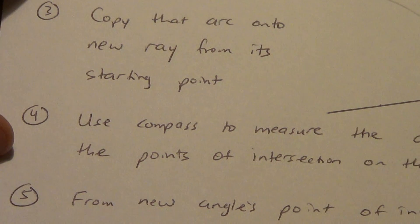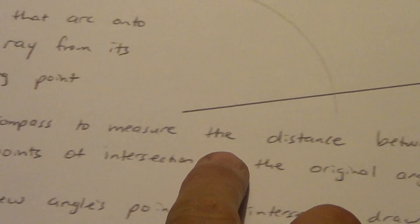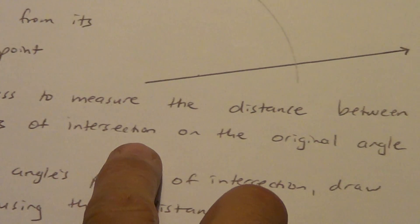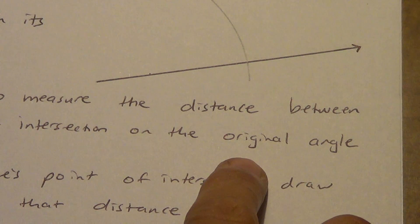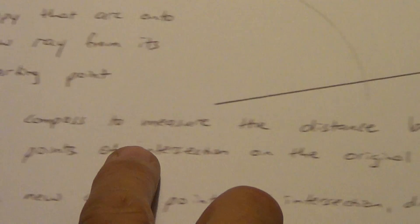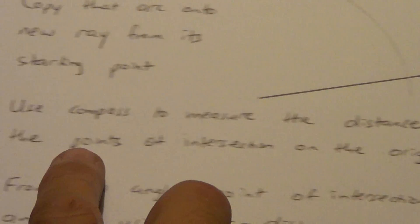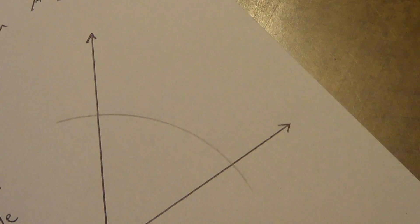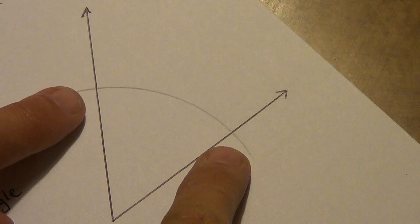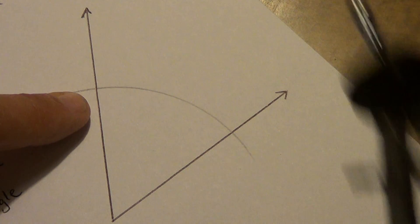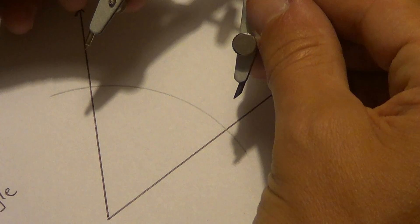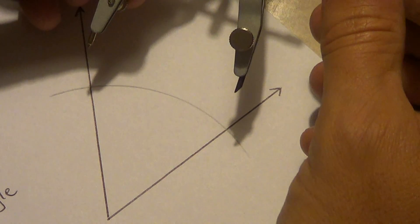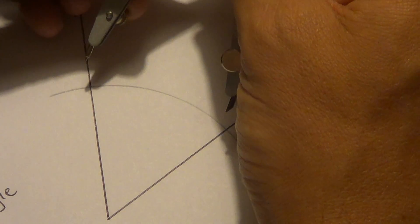Alright, step four. Use your compass to measure the distance between the points of intersection on the original angle. Let's go back to that original angle, and you see these two points of intersection? That's what we want to do. We want to measure this distance. Now it's probably not going to be exactly the same as what I have right now, unless you drew a 60-degree angle, in which case it will be. Why? We might discuss that later. Actually, we will.